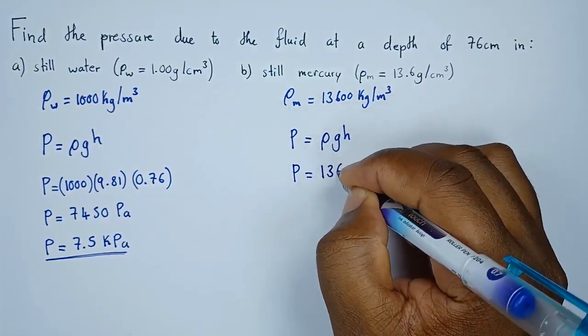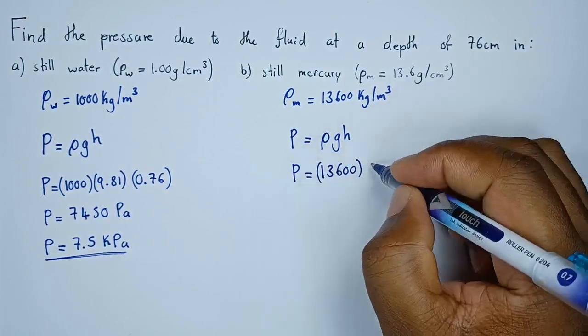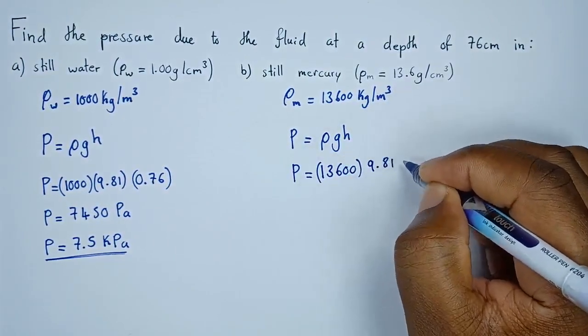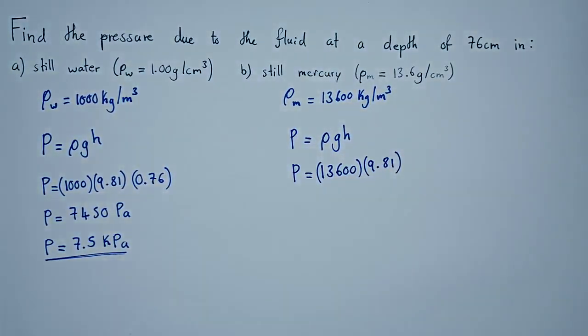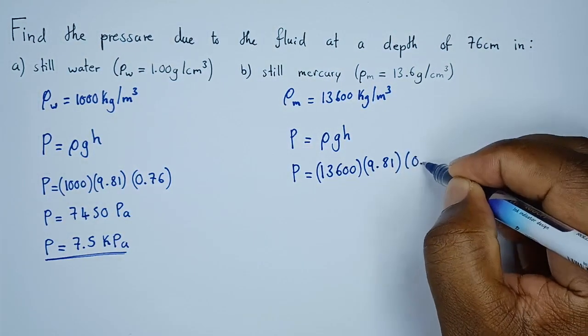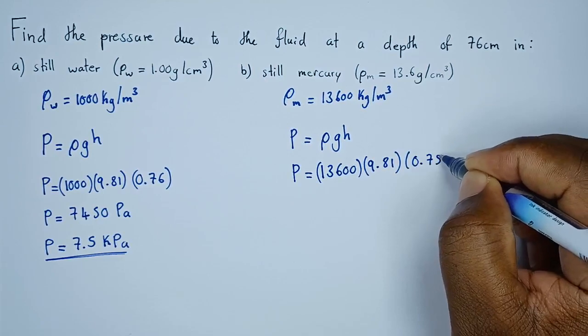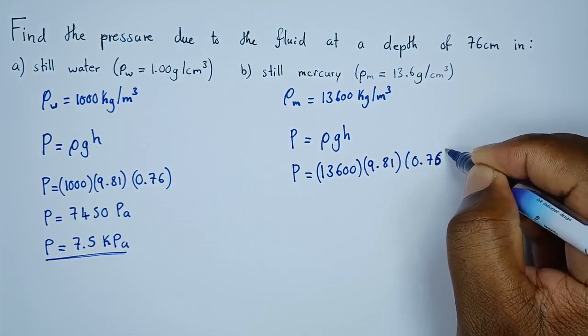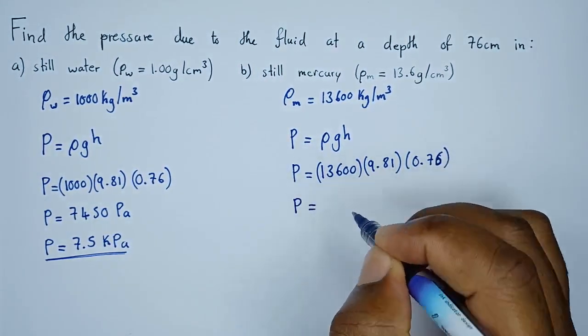Acceleration due to gravity is 9.81 meters per second squared and the height, we use it in meters, which is 0.76.